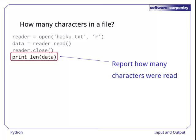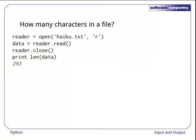Finally, we use len to find out how many characters are in the variable data and print that out. Again, what we're really reporting is the number of bytes, not the number of characters, but we'll assume for now that there's a one-to-one match. When we run our program, it tells us the file is 293 characters long.